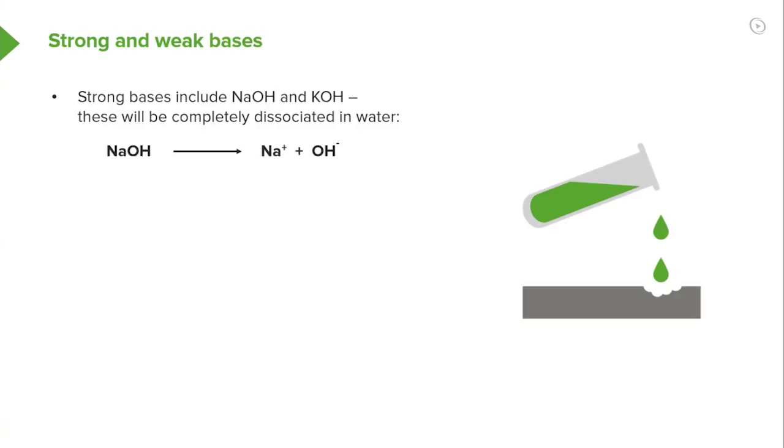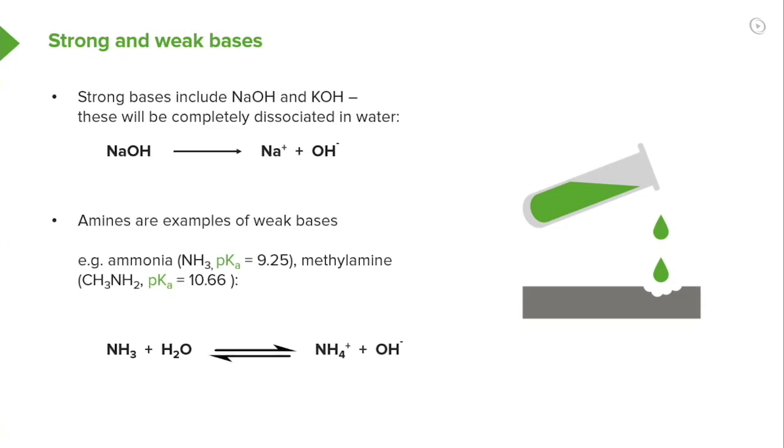Strong bases include things like sodium hydroxide. Indeed, mostly every hydroxide is regarded as a strong base. And as we said before, in the case of hydrochloric acid, sulfuric acid, and nitric acids, they're considered to be almost completely dissociated in water. And so therefore, in the case of our NaOH, we see that sodium ion and hydroxide ion are formed in solution.